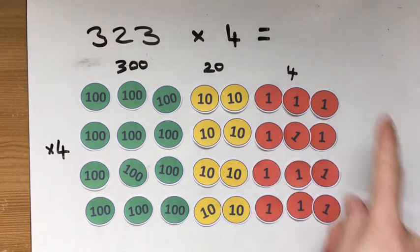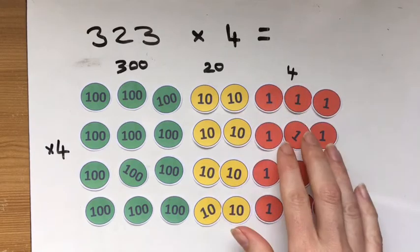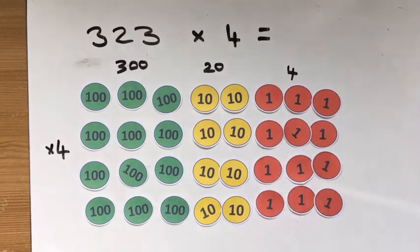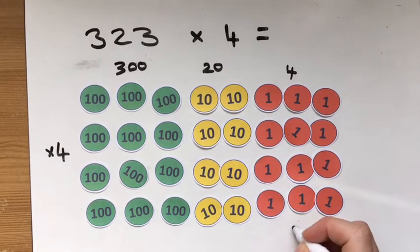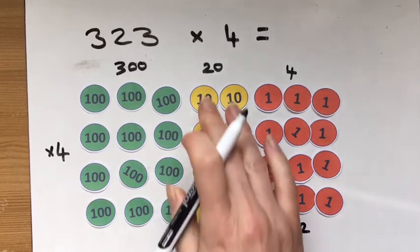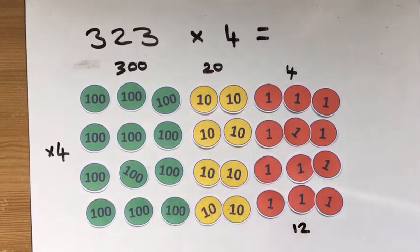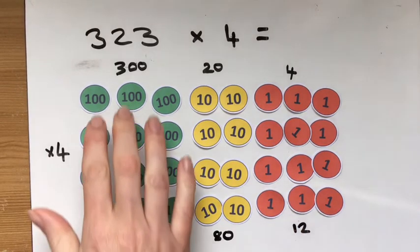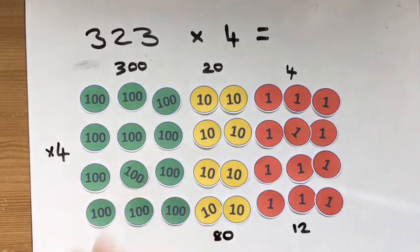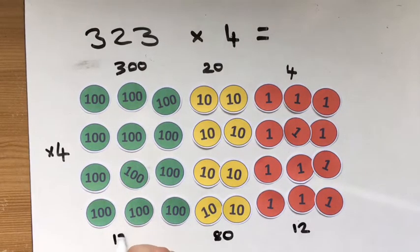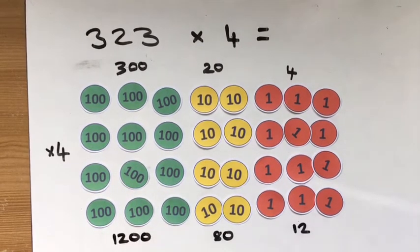Let's start at the ones again. We've got 3, 6, 9, 12, 10, 20, 40, 60, 80, and 3, 6, 9, 12, 100 here as well.